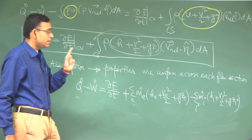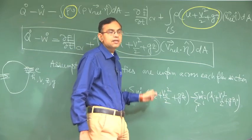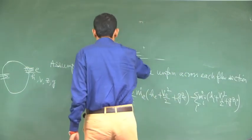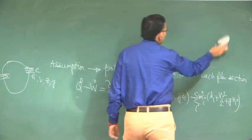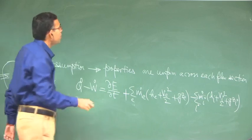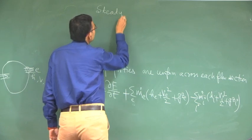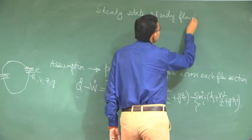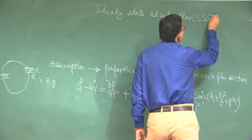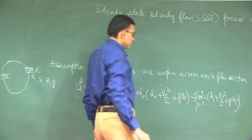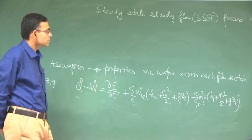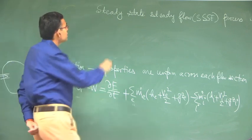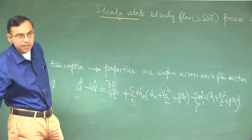One major assumption is that all properties are uniform over the respective sections. Based on this background, we will now learn a very important type of process which is called the steady state steady flow process. There are two coupled keywords here: one is steady state, another is steady flow.